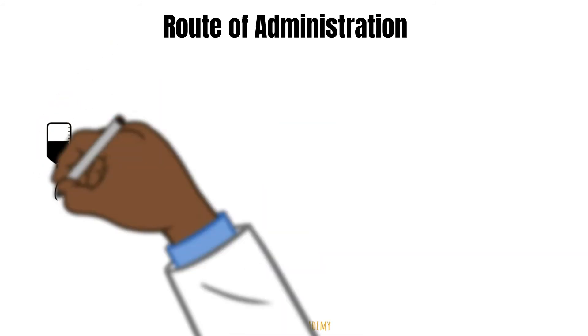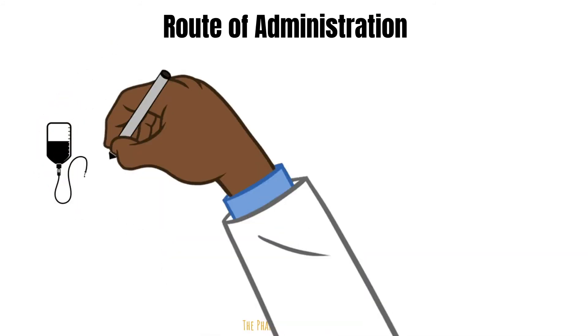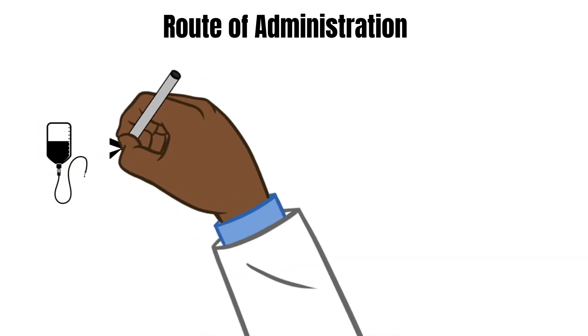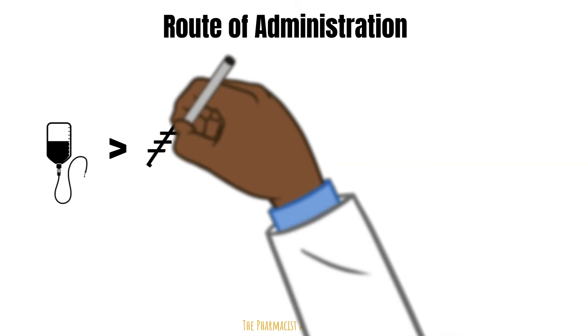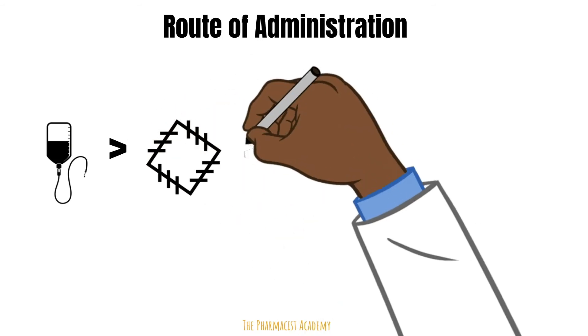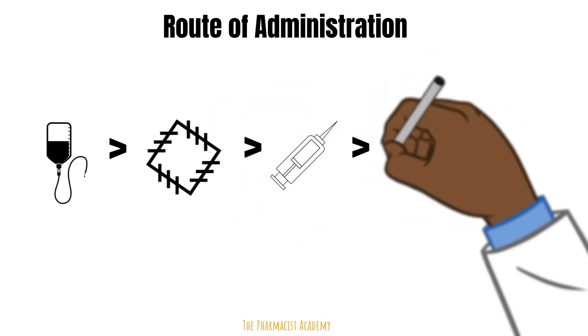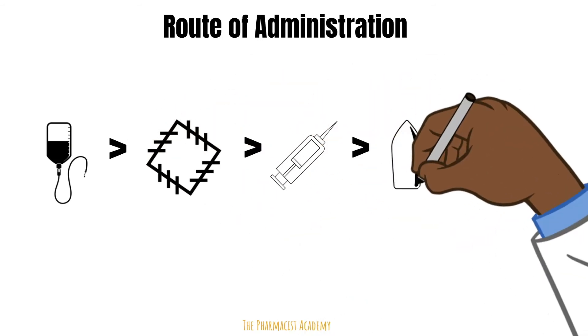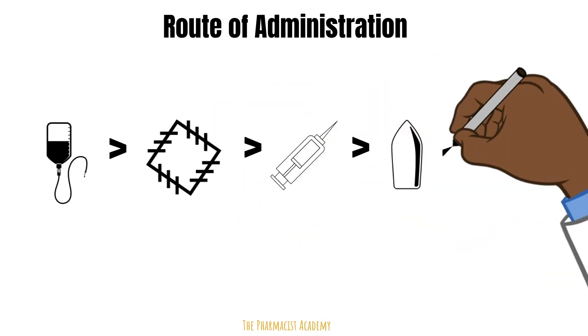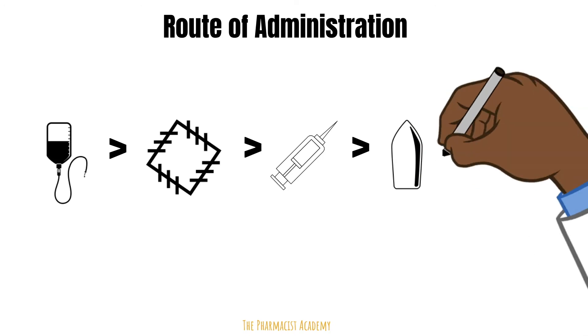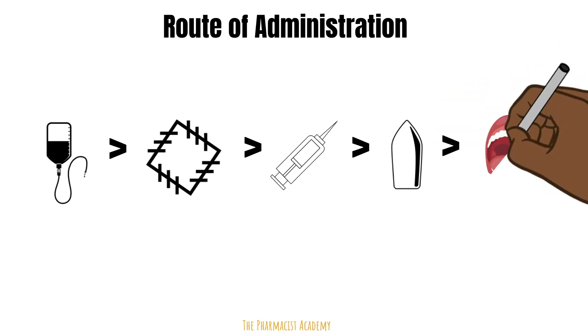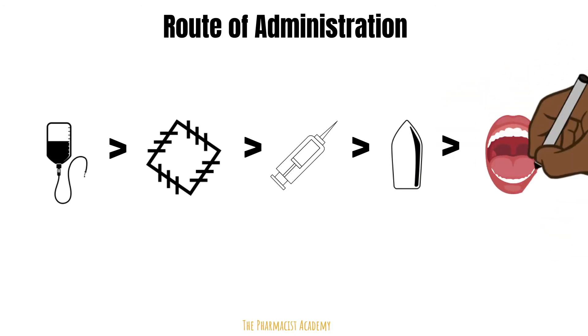Depending on the route of administration, the amount of drug that gets to the site of action will vary. Intravenous is number one, then transdermals, then injectables and suppositories, and oral medications usually have the least bioavailability.